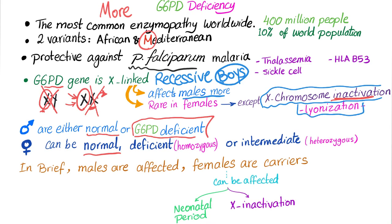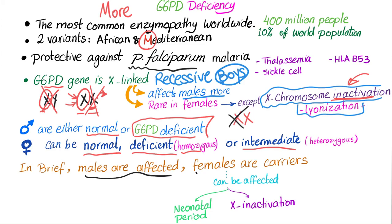Females can be normal — most of them are — or G6PD deficient if both X chromosomes are affected, or intermediate if only one is affected. So thanks to X chromosome inactivation, some females will get this disease. In general, males are affected and females are carriers, passing it to their male offspring. Their female children will be normal, unless X chromosome inactivation occurs — proving the point of your professor.